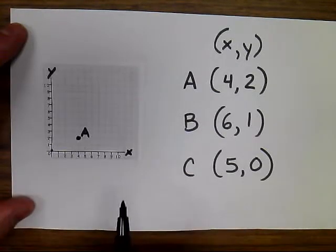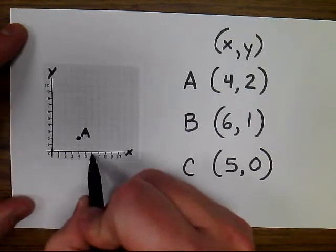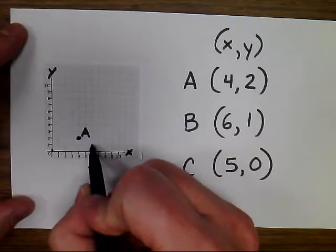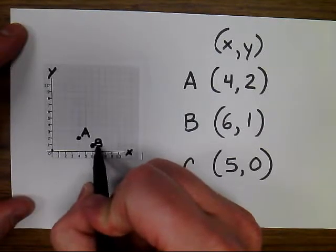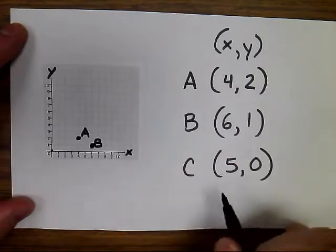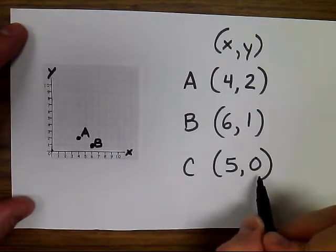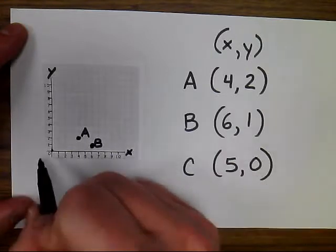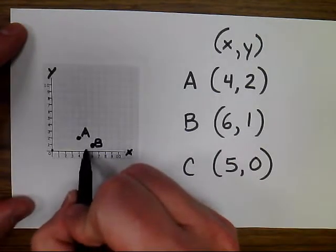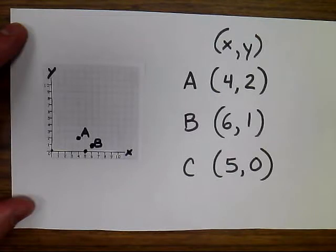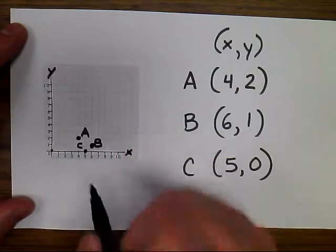When I go to label B, I'm going to go over 6 on the x-axis and then up 1 on the y-axis and that's my label for point B. For point C, I'm going to go over 5, and then because my y-axis has a 0 value, I'm going to stay right on the x-axis at 5 comma 0. It's not going anywhere.